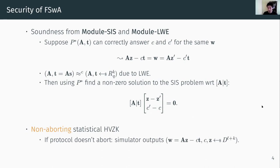For honest verifier zero-knowledge, we are usually interested in the non-aborting case. In a concrete application like a signature or non-interactive zero knowledge, we don't have to argue security about the rejected transcript. The non-aborting statistical honest verifier zero-knowledge simulator first picks the challenge and response Z, and then later determines W, the first message. This is statistically indistinguishable from the actual transcript.